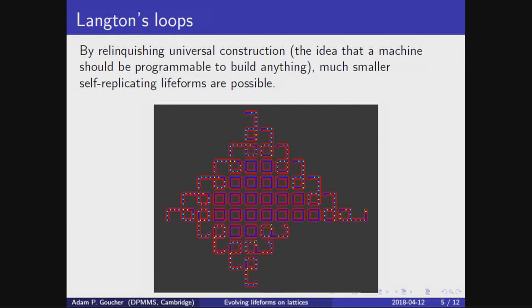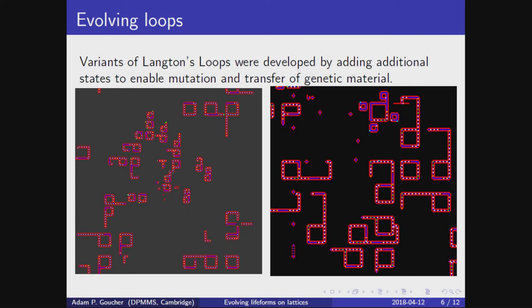With small modifications, we can see them evolve. The left-hand pane is the nine-state EVO loop, which actually was found to demonstrate richer behavior than its creators conceived. The right pane has a tenth state to enable genetic transfer between loops. Fundamentally, however, these loops will always remain loops. We won't see multicellular organisms and plants and animals and intelligent life, because there's not the same flexibility that there is in von Neumann's cellular automata.